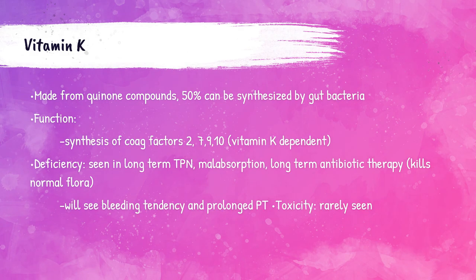Vitamin K, or phylloquinone, is a fat-soluble vitamin that is necessary for the synthesis of coagulation factors 2, 7, 9, and 10. A deficiency of vitamin K causes patients to have a tendency to bleed and have abnormally long prothrombin times, or PT tests. The PT test is discussed in detail in the hematology lectures, but recall that the PT test is a test to determine how quickly the blood coagulates.